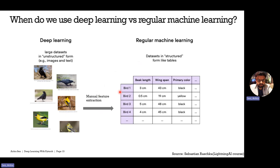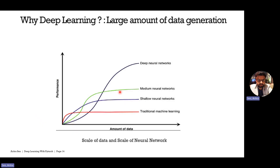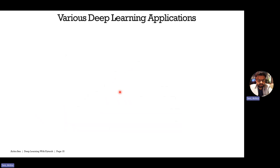To summarize the two motivations so far: first, deep learning eliminates the need for manual feature extraction when working with unstructured data. Second, with the huge amount of data now available, deep neural networks deliver much more accurate results compared to traditional machine learning algorithms.